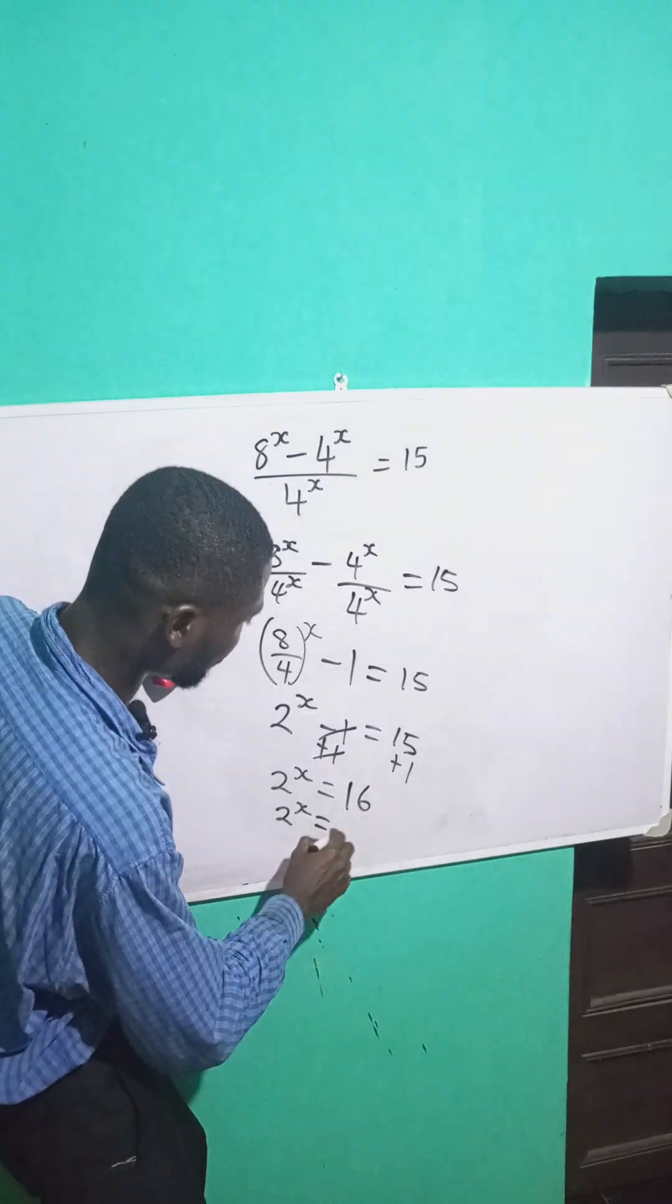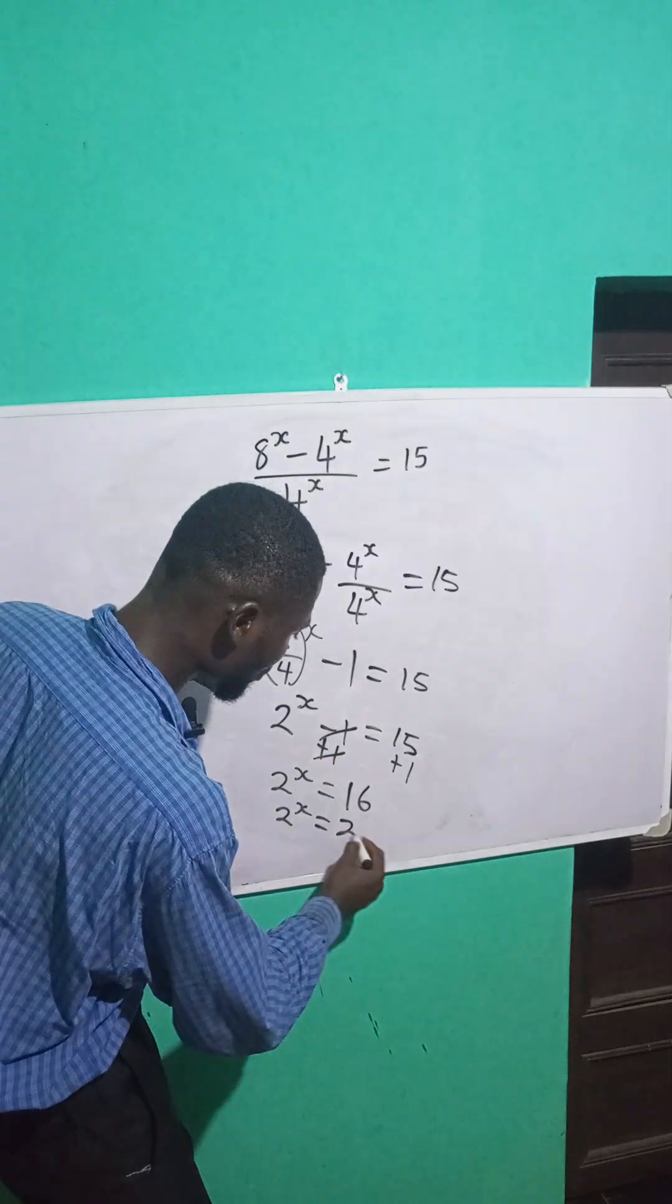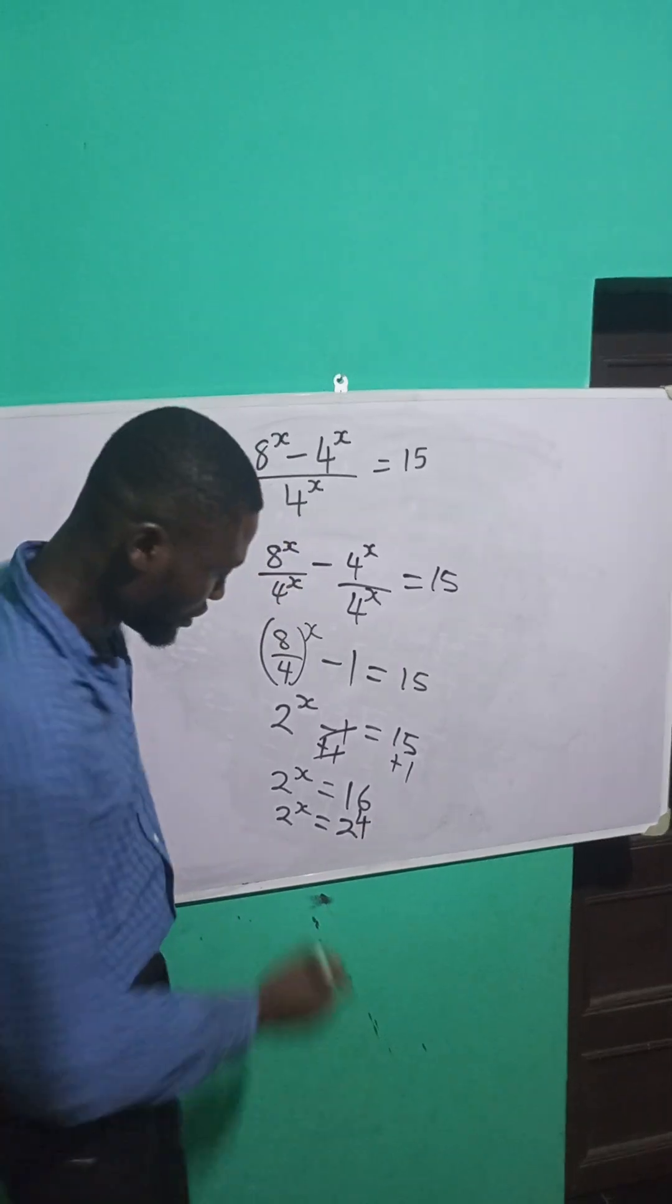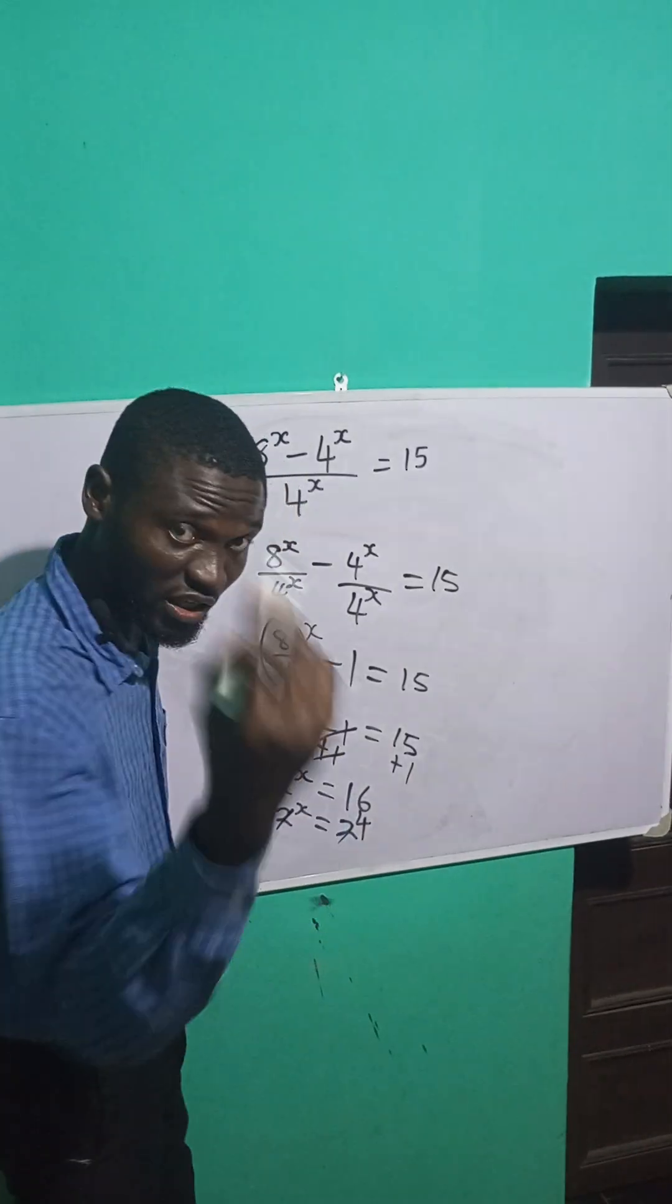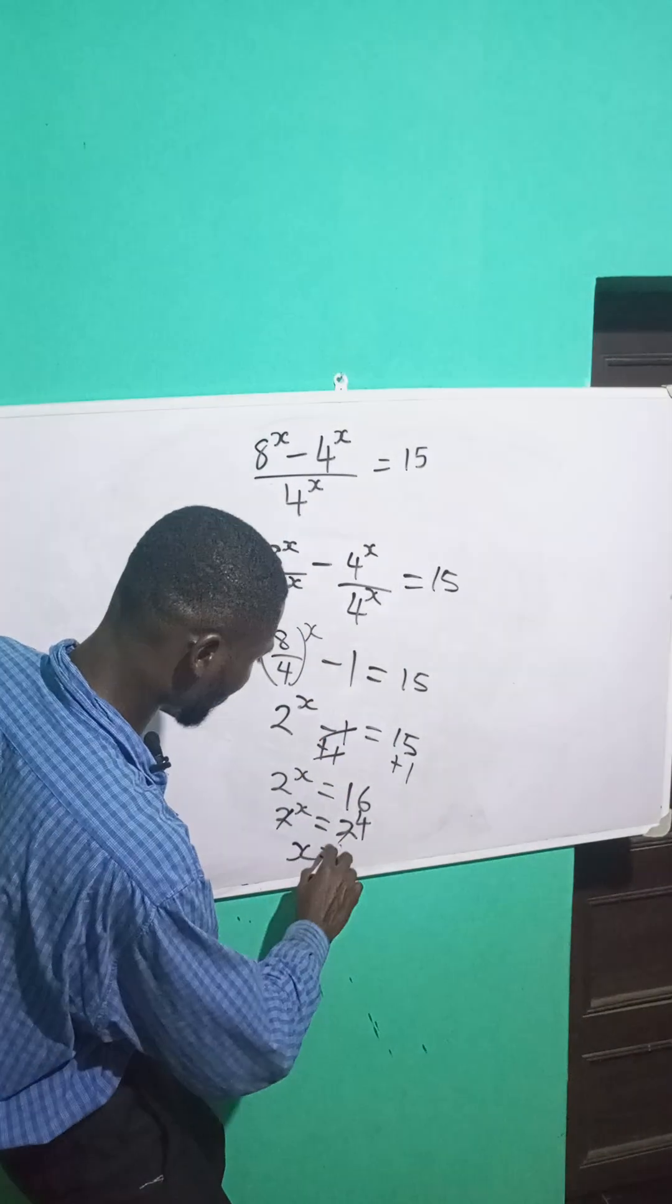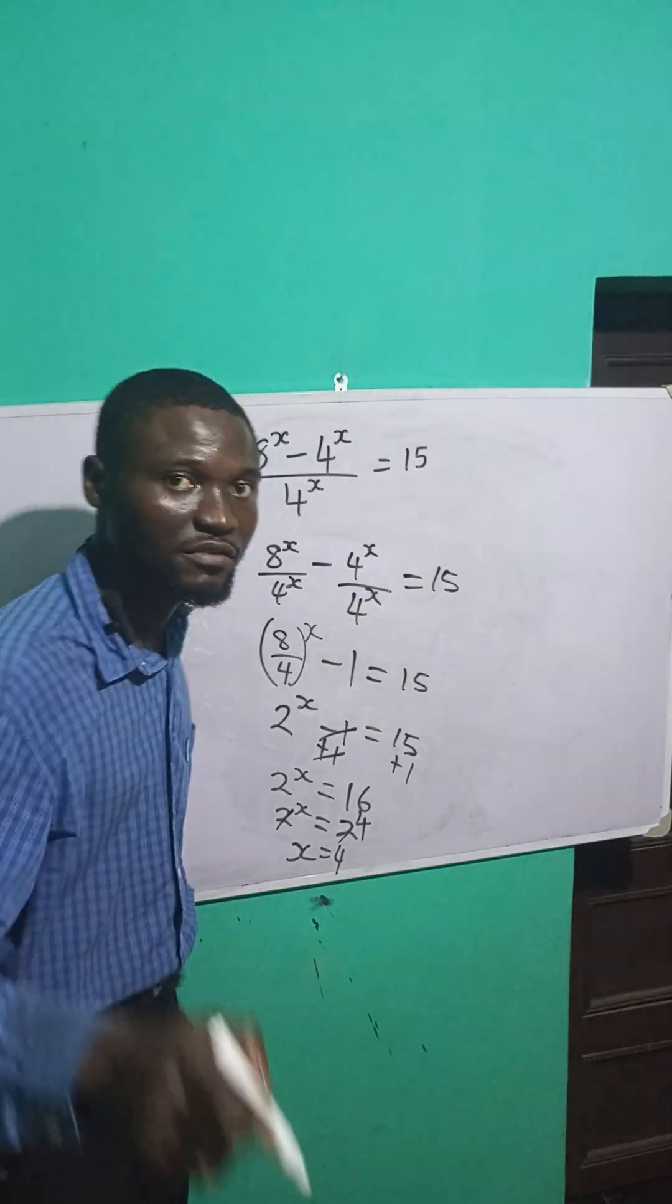So 2 raised to power x equals 16, which can be written as 2 raised to power 4. They have the same base, so I'll equate the exponents. That means x equals 4. See you in the next video.